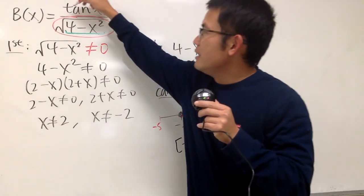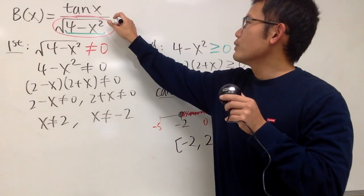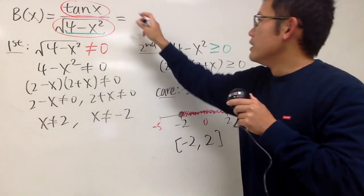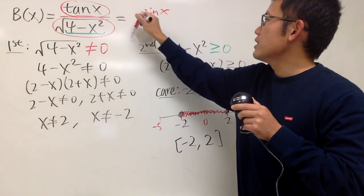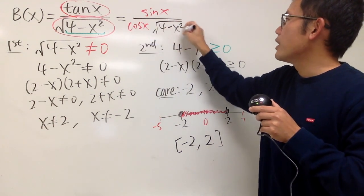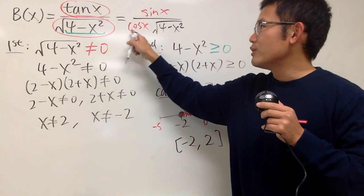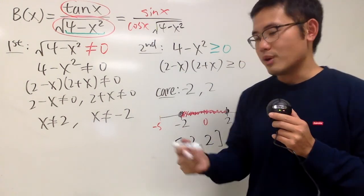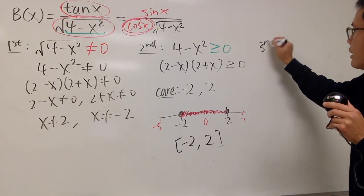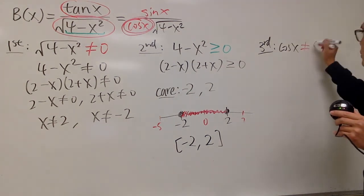Lastly, this tangent is suspicious — it's technically sine over cosine. We also have to look at the tangent part. So for tangent, it's sine x over cosine x, and you still have that square root of 4 minus x squared on the bottom — but we took care of that part already. Just like the first condition, we have to make sure that cosine x is not equal to 0. That's the third restriction.